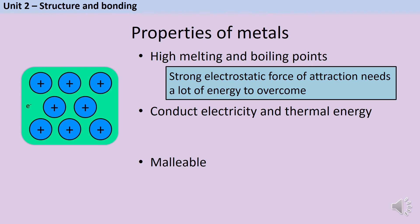The delocalised electrons are responsible for conducting electricity and thermal energy. As we said, they aren't tied to one particular ion, they're free to move, and so because they can move through the metal they can carry charge or carry thermal energy from one side of the metal to the other.